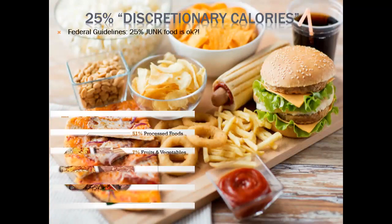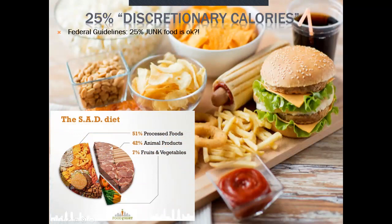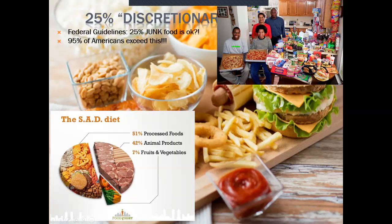The Union of Concerned Scientists estimates that if we met minimum dietary guidelines — greens three times a week — we would save 100,000 lives per year by eating healthier. And in that healthy diet recommendation, 25% of your calories were allowed to be discretionary — a quarter of your food can be junk. 95% of Americans exceed that 25%. A photographer has been going around the world buying families their week's worth of groceries and taking a picture — the American family's photo is dominated by chips and juice, with barely any fruit.